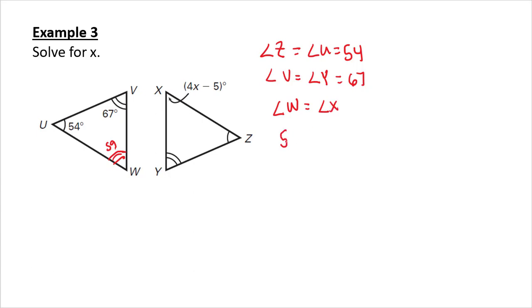and I get angle W equals 59, which equals angle X. Angle W was 59, and this is 4x minus 5. I add 5 to both sides, I get 64 equals 4x. X equals 16.